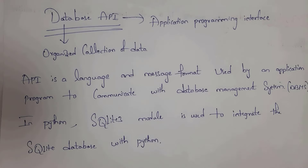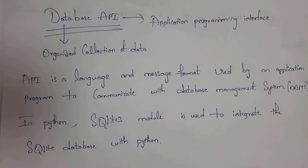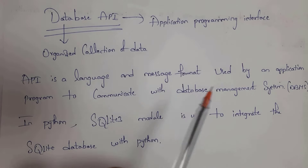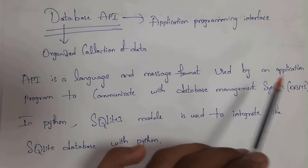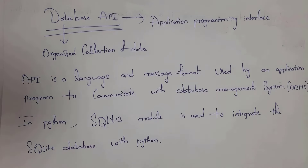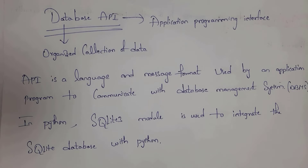API stands for Application Programming Interface. The name itself says — Interface means middle layer. API is a language and message format used by an application program to communicate with a database management system. If you want to communicate Python with a database, then we need one Application Programming Interface, that is API.